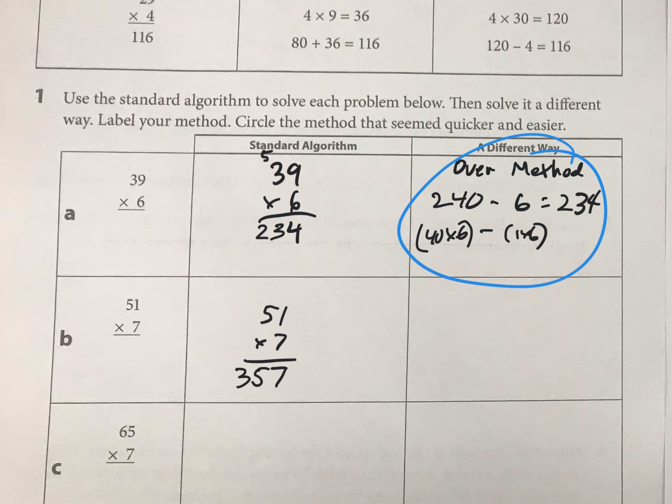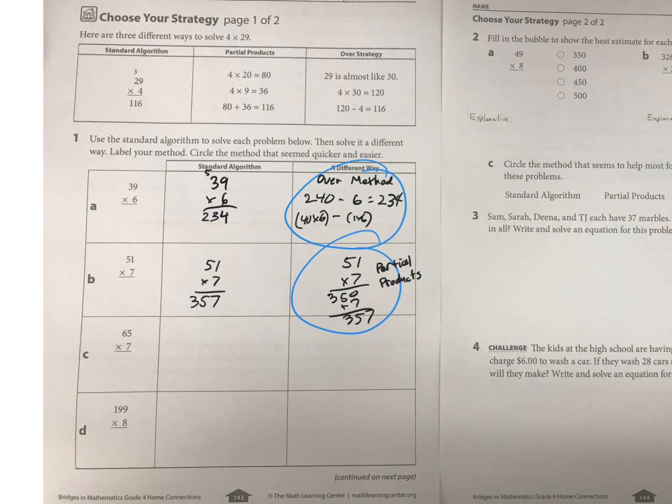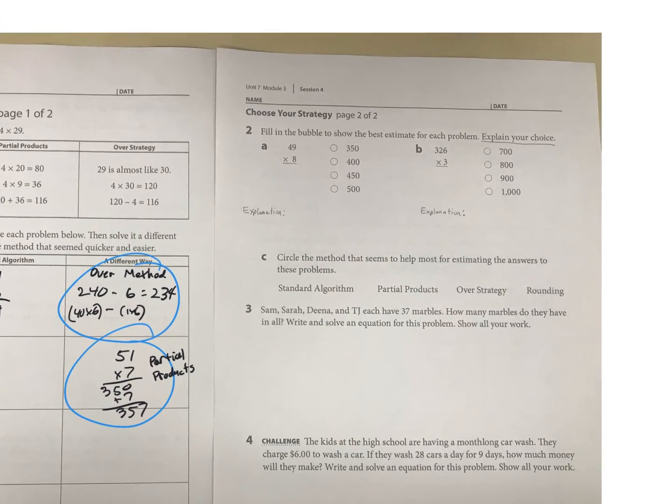I would do this one partial products, I think. So I would have basically 7 times 50 and 7 times 1 and add them up. So in quicker, the one on the left, what do I like better? I like this one better. This one was called partial products. So just do the other two on your own. What method do you think is better? I don't know about quicker and easier. I tend to always prefer the non-standard algorithm method.